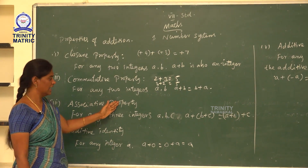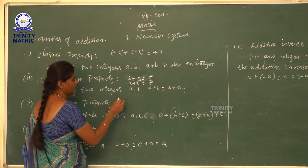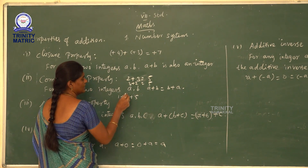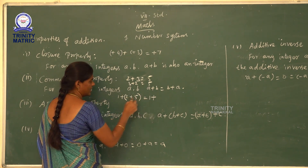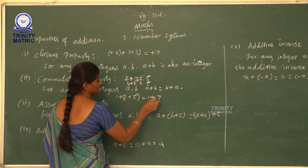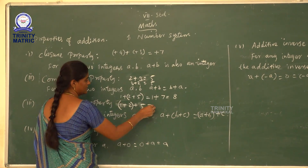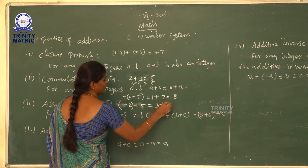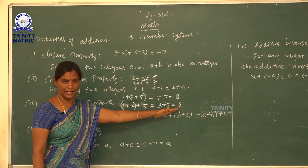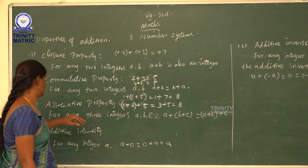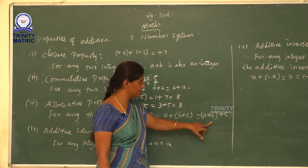Next, associative property. We take three integers and add them in any grouping — the answer will be equal. For example, 1 plus 2 plus 5. Grouping the second and third: 1 plus (2 plus 5) = 1 plus 7 = 8. Grouping the first two: (1 plus 2) plus 5 = 3 plus 5 = 8. In general form, for any three integers a, b, c: (a + b) + c = a + (b + c).